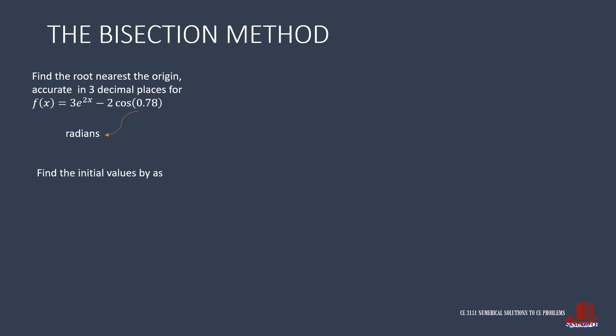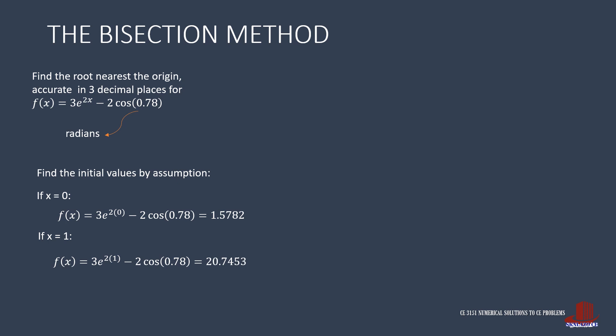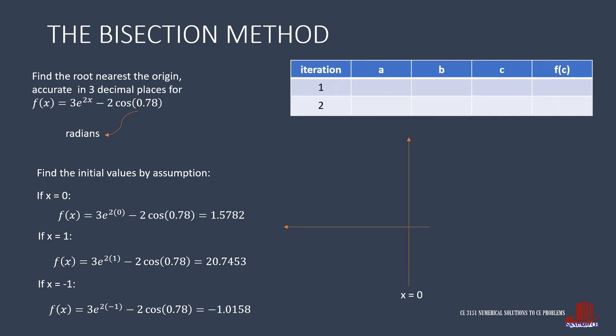The first step is to look for the initial values through assumption. If x = 0, f(x) = 1.5782. If x = 1, f(x) = 20.7453 — the trend is rising. We try x = -1: f(x) = 3e^(2×(-1)) - 2cos(0.78) = -1.0158. The x interval for the sign jump is then taken as x from -1 to 0.